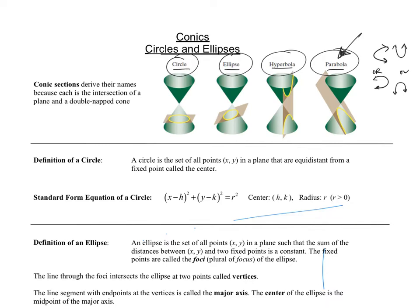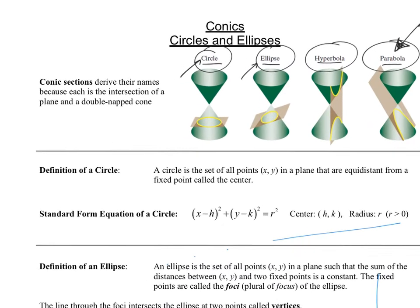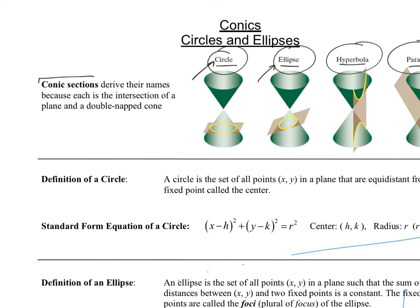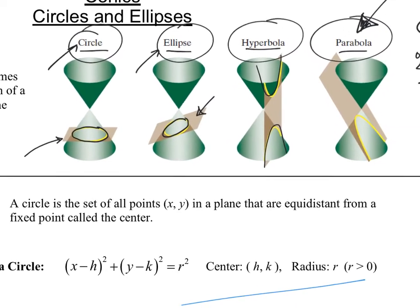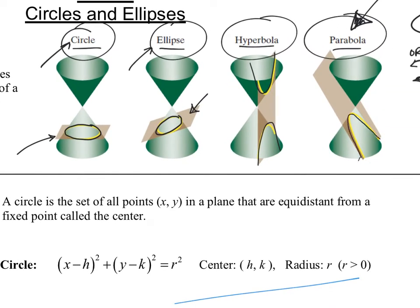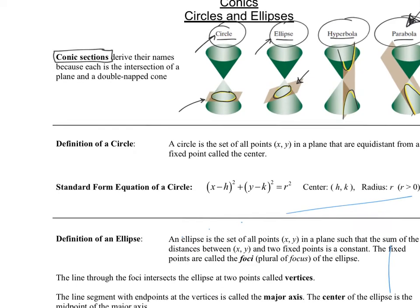To start, we're going to look at circles and ellipses. The reason they're called conic sections is because it's just different ways of cutting a cone. If you take a plane and cut it parallel to the bottom of the cone, you get a circle. At a diagonal you get an ellipse. Cutting through both cones gives the hyperbola, and a slanted cut through one gives the parabola.